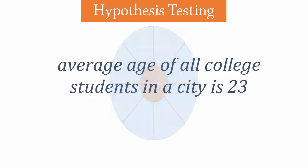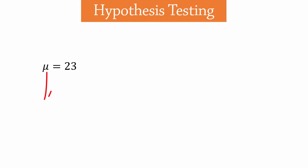Suppose we make a claim that the average age of all college students in a city is 23, which we write as µ equals 23. Since this hypothesis contains equality, we refer to it as the null hypothesis, represented by H0.